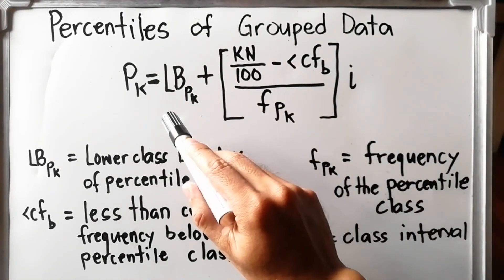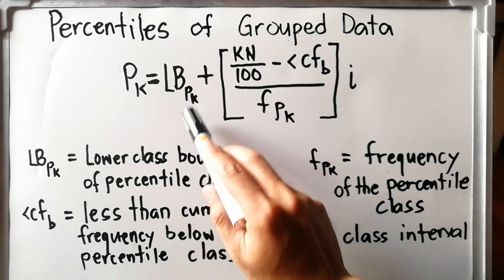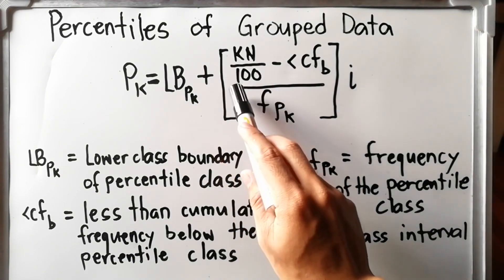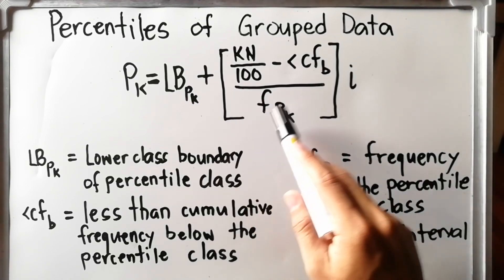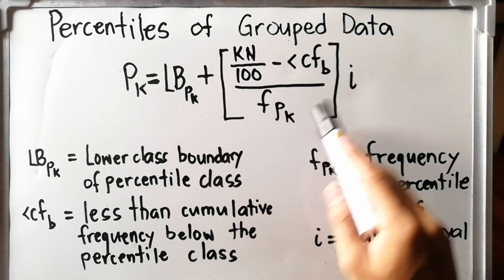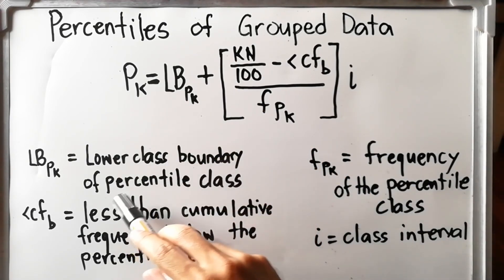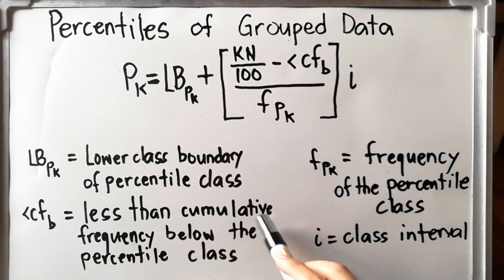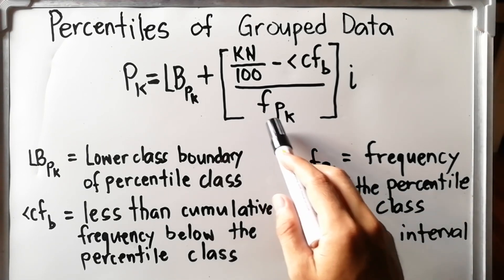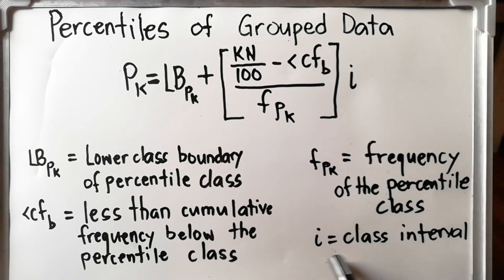This is the formula for getting the percentile: P sub K is equal to LB sub P sub K plus the quantity of KN over 100 minus less than CF sub B, all over F sub P K, times I. LB sub P K is the lower class boundary of the percentile class. Less than CF sub B is the less than cumulative frequency below the percentile class. F sub P K is the frequency of the percentile class, and I is the class interval.